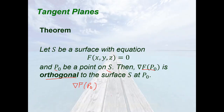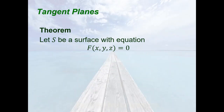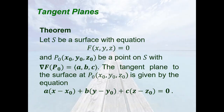Thus, the gradient of f at p₀ is the normal vector to the surface S at p₀ that we need. So we have this theorem: Let S be a surface with equation f(x, y, z) = 0, and let p₀ = (x₀, y₀, z₀) be a point on S with the gradient of f at p₀ equal to the vector (a, b, c). Then the tangent plane to the surface at p₀ is given by a(x − x₀) + b(y − y₀) + c(z − z₀) = 0, where a, b, c are the components of the gradient vector and (x₀, y₀, z₀) are the coordinates of p₀.